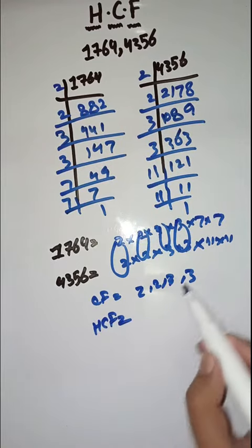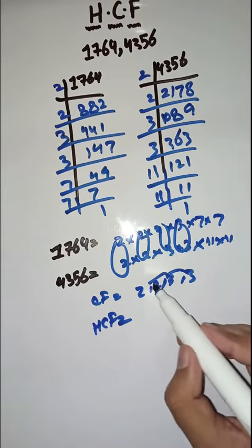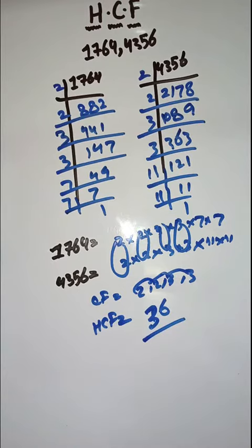Now we have to find HCF. HCF is the product of the common factors. The common factors are two 2s and two 3s: 3 times 3 is 9, continuing the multiplication gives us 36. So HCF is 36. Thank you.